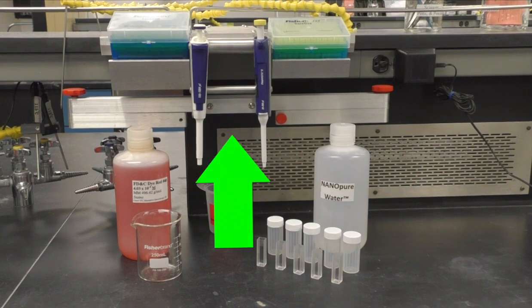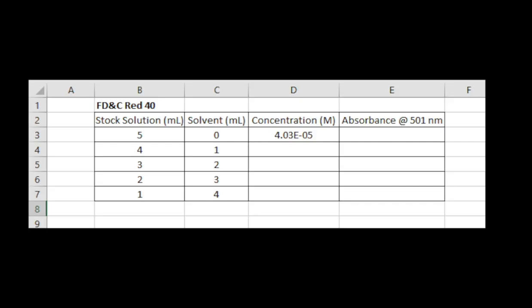You'll also need micropipettes and tips. To start, make a table in Excel listing the milliliters of stock solution, milliliters of solvent, concentration, and a column for absorbance for each dilution. You should make 3 to 5 different dilutions for the most accurate results.